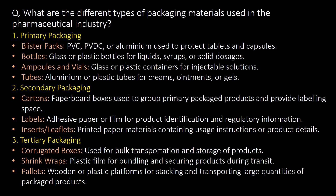What are the different types of packaging materials used in the pharmaceutical industry? Blister packs, bottles, ampoules and vials, and tubes are used as primary packaging. Cartons, labels, and inserts or leaflets are used in secondary packaging. Corrugated boxes, shrink wraps, and pallets are used in tertiary packaging.